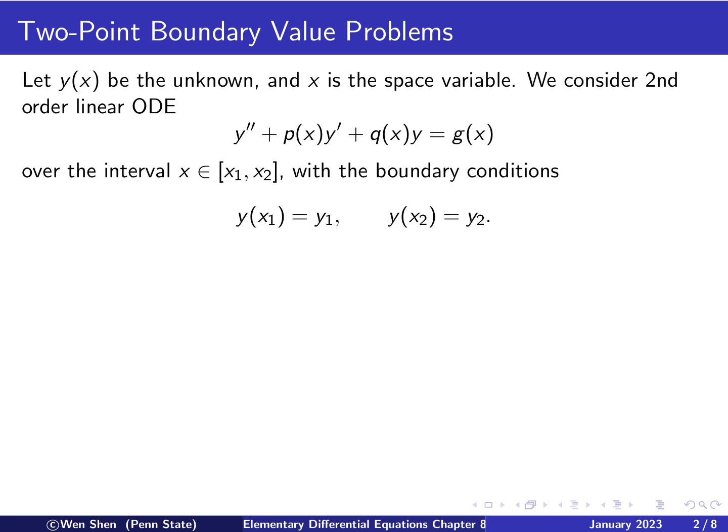Let y as a function of x be the unknown, and we consider the second-order linear ODE in the following general form: y double prime plus p y prime plus qy equals g, where p, q, and g are three functions of x, over an interval x from x1 to x2.